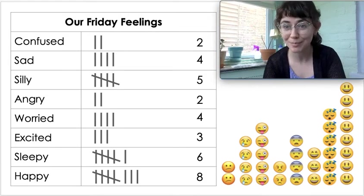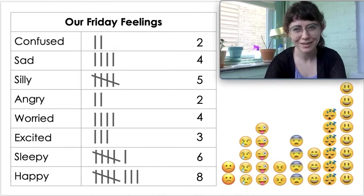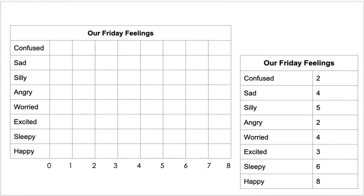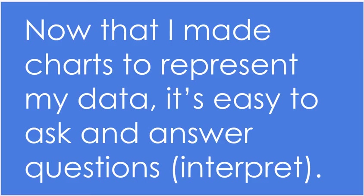Next up, there's one more kind of graph that we learned about. It was a bar graph. I took my table and just the numbers, and now we're going to make a bar graph. We've got our title, we've got our categories. But what's different on a bar graph? We've got these numbers down here. These numbers are the scale. They tell us really easily how many are in each group. So I filled up the bar up until the number that it represents. Now that I made those charts to represent my data, it's going to be so much easier to ask and answer questions or interpret that data.